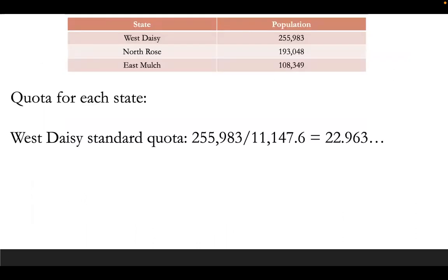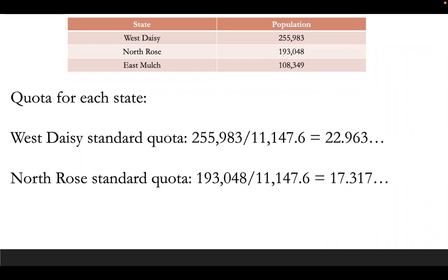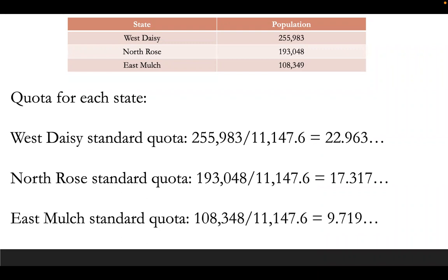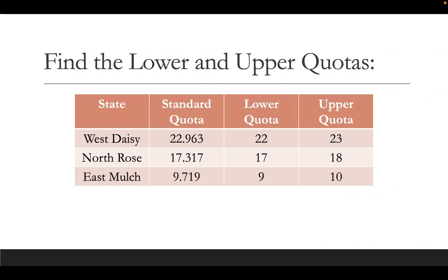Now that we have our standard divisor, we can find our standard quota for each state. For West Daisy, we take our population of 255,983 and divide by our standard divisor — that gives us roughly a standard quota of 22.963. These decimals go on; I generally round to about three decimal places. For North Rose, we take the population, divide again by the same standard divisor, and we get a quota of 17.317. And East Mulch, a standard quota of 9.719. So when we put these into a table, we're going to round down for our lower quotas and round up for the upper quota.